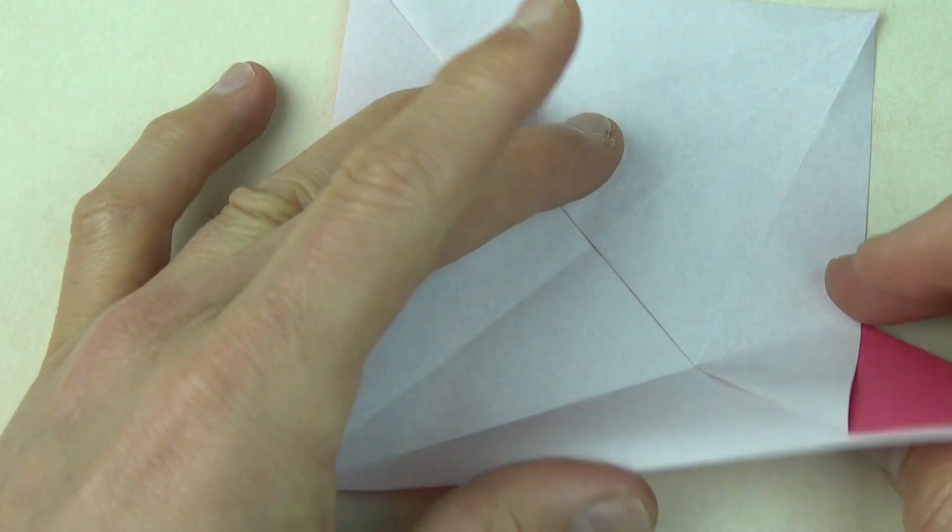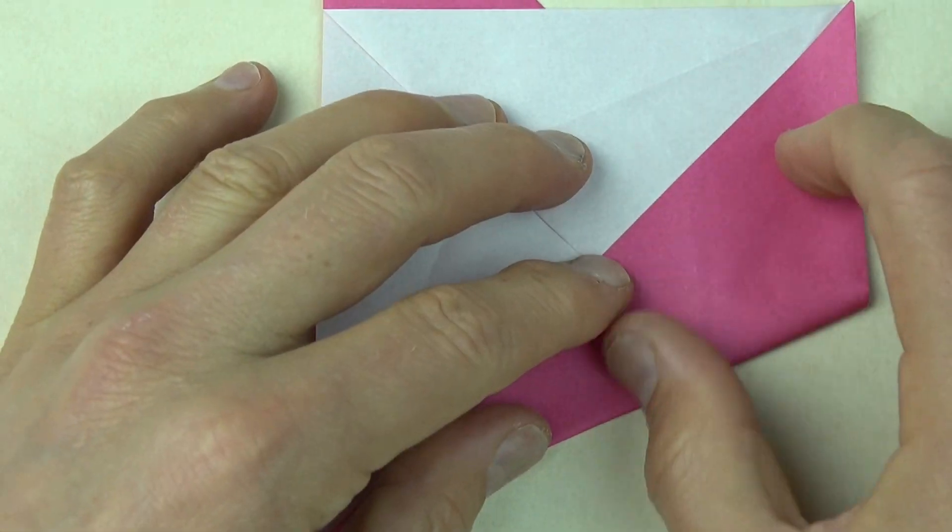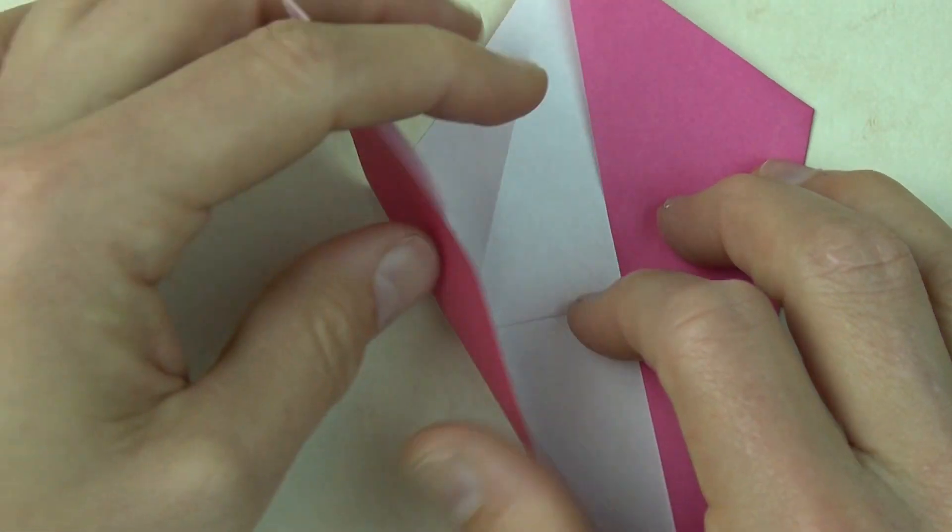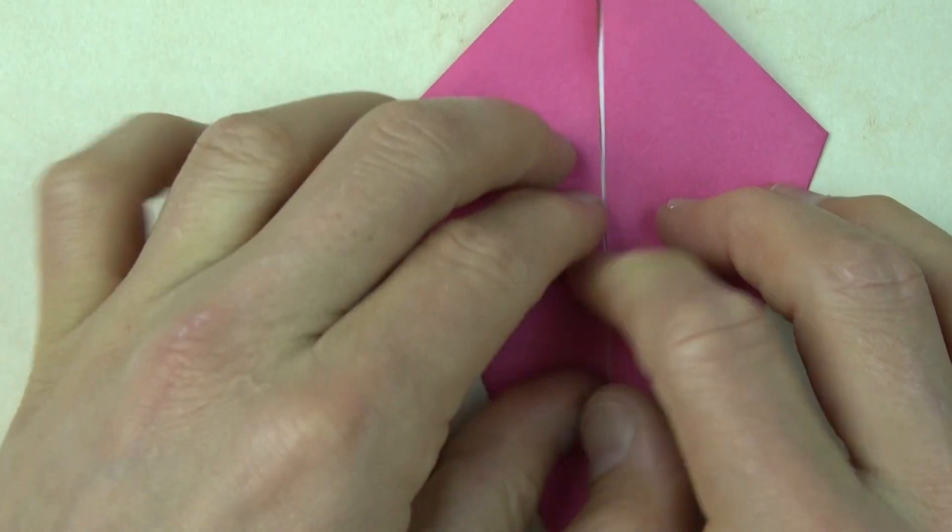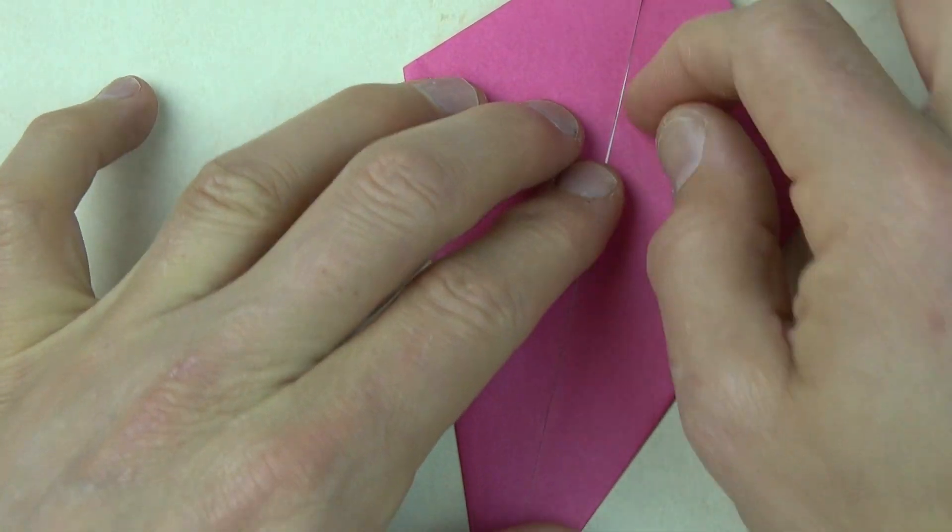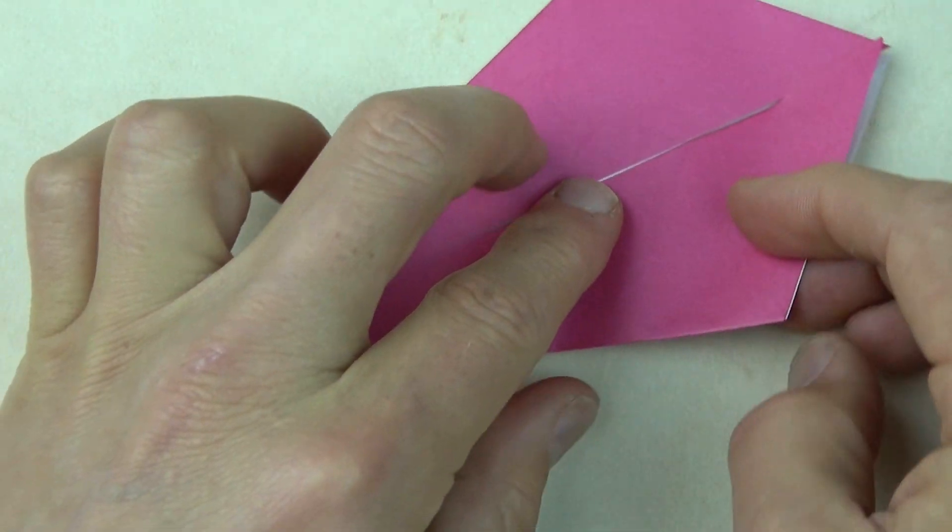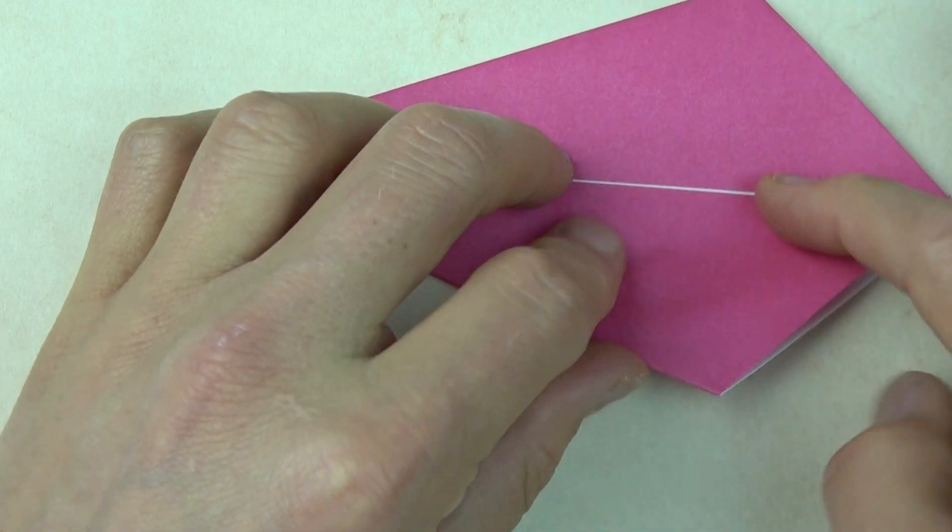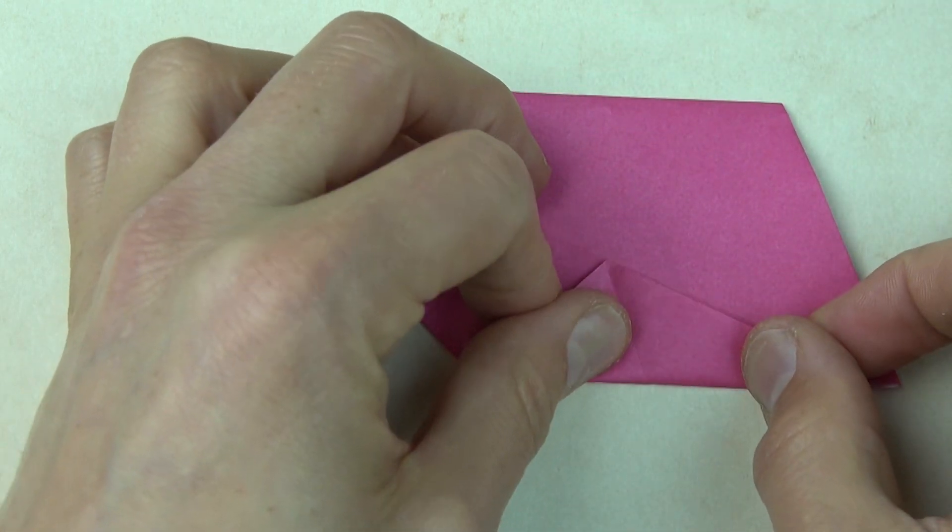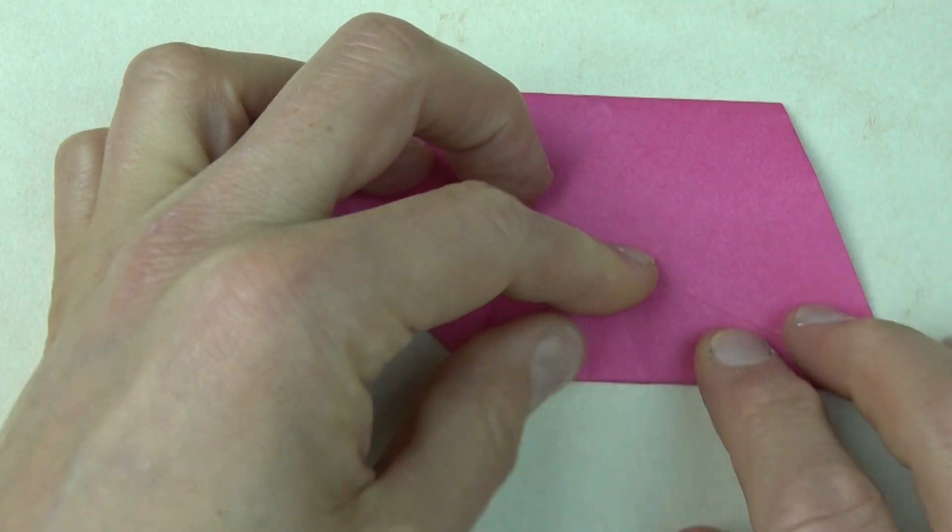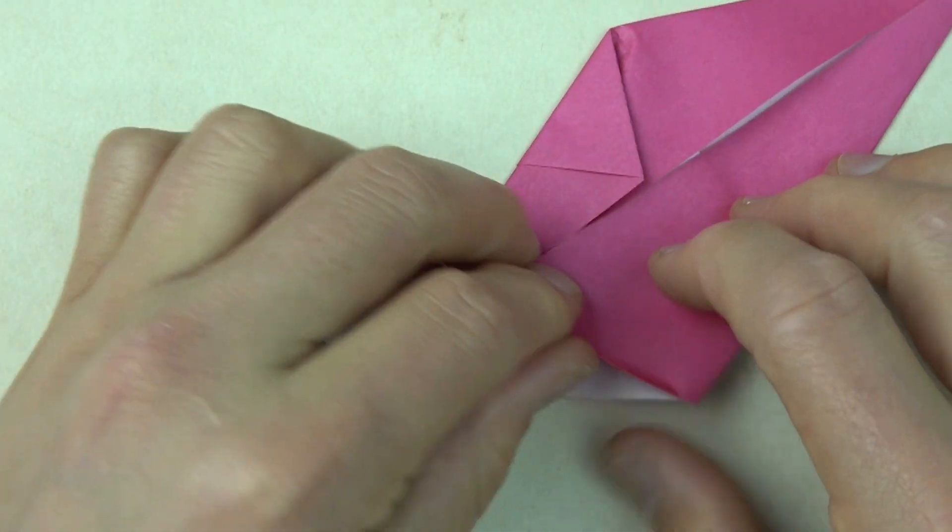Now fold this flap up on the existing crease. And same on this side. And now fold this edge to the crease. And repeat.